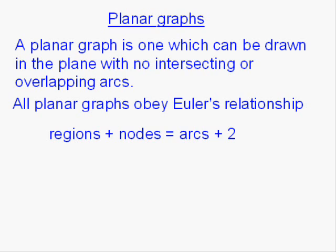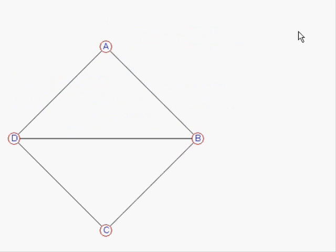Let's see this in operation with one of the shapes we have already seen. We saw a few moments ago that this shape was planar. Now, there is Euler's relationship. Regions, nodes, arcs. Let's see if this obeys that. Regions first of all. This has three regions. Two triangles inside and you always count the outside of the shape as a region as well. So one, two, three regions.